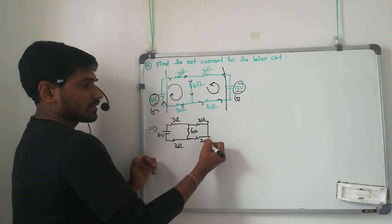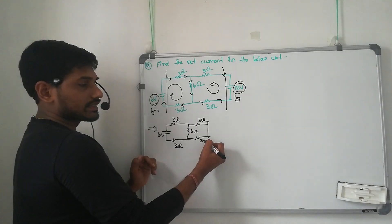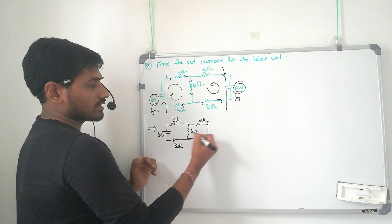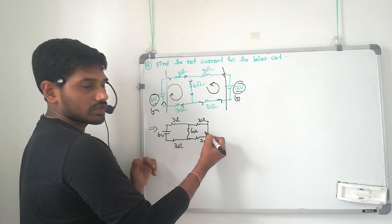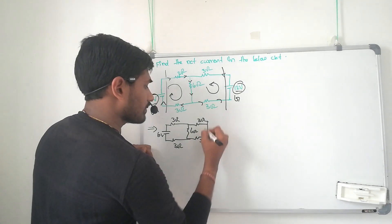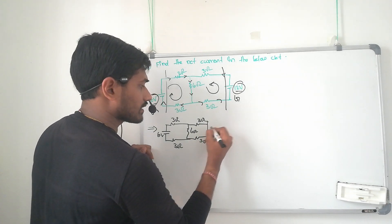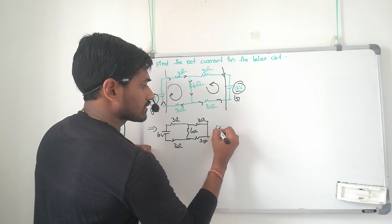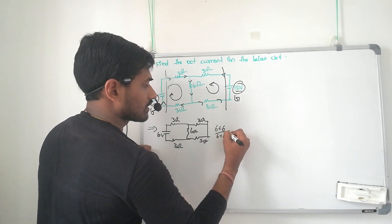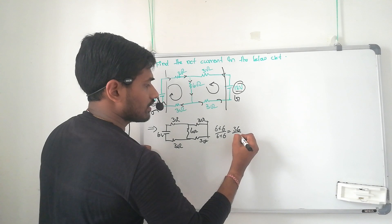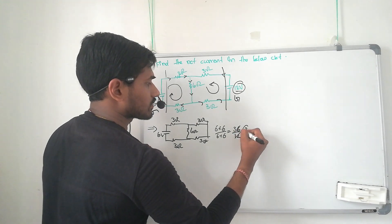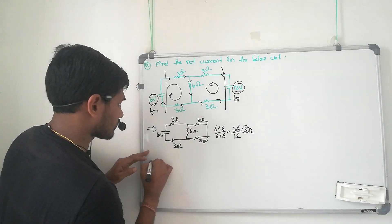So here 3 ohm and 3 ohm will be in series — 3 plus 3 equals 6. Here 6 ohm and 6 ohm are in parallel, so 6 into 6 divided by 6 plus 6 equals 36 divided by 12, which is 3 ohms.